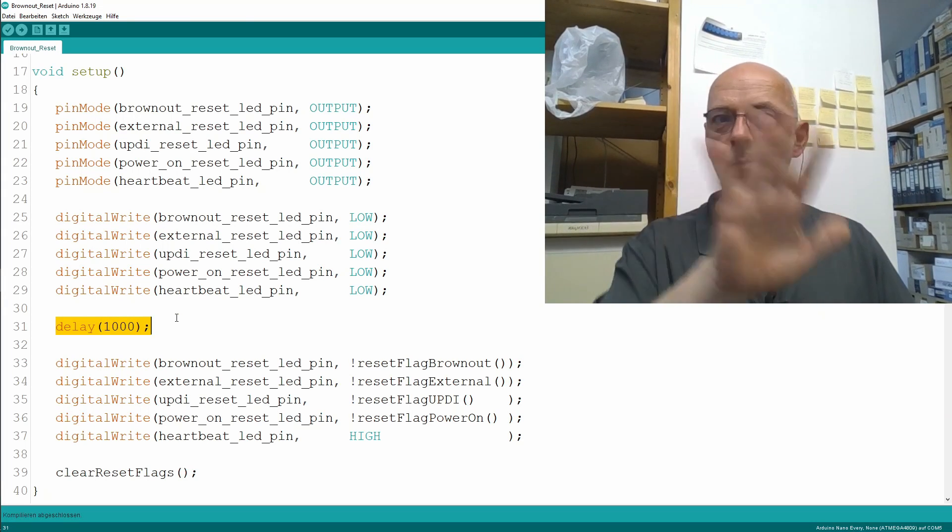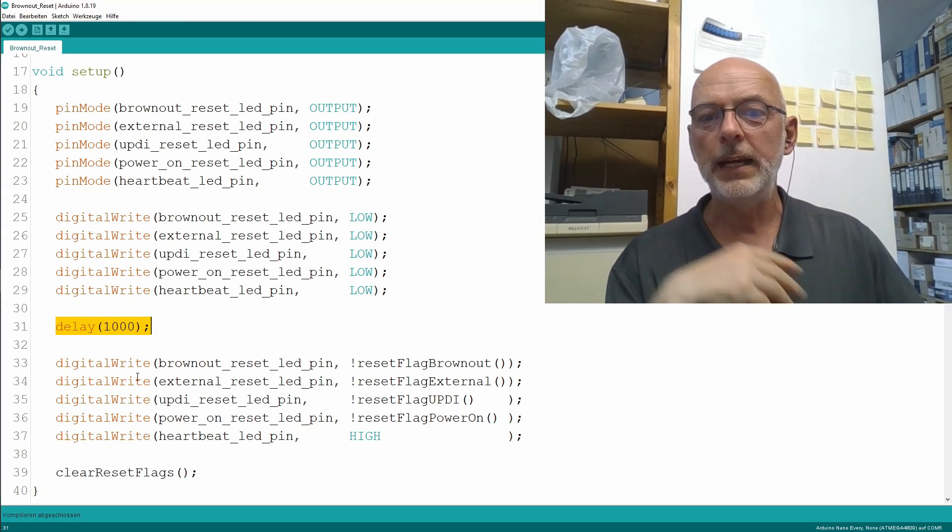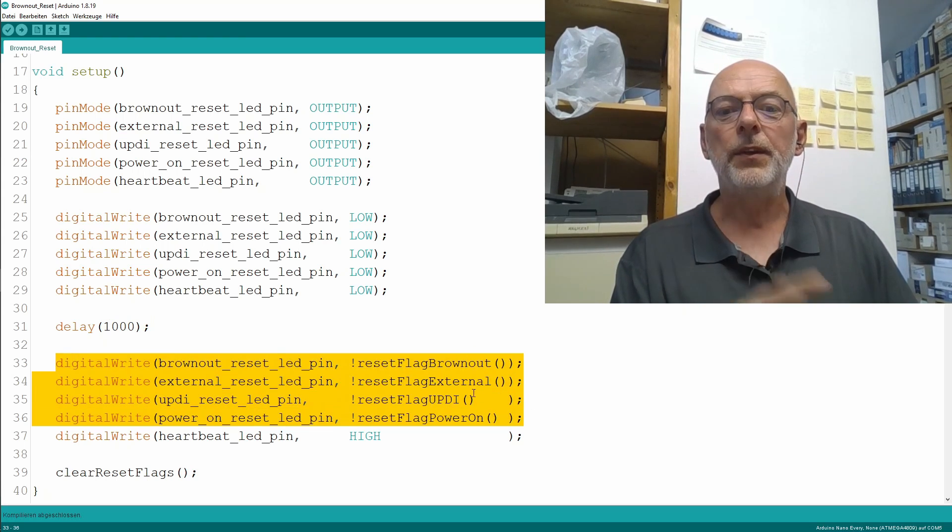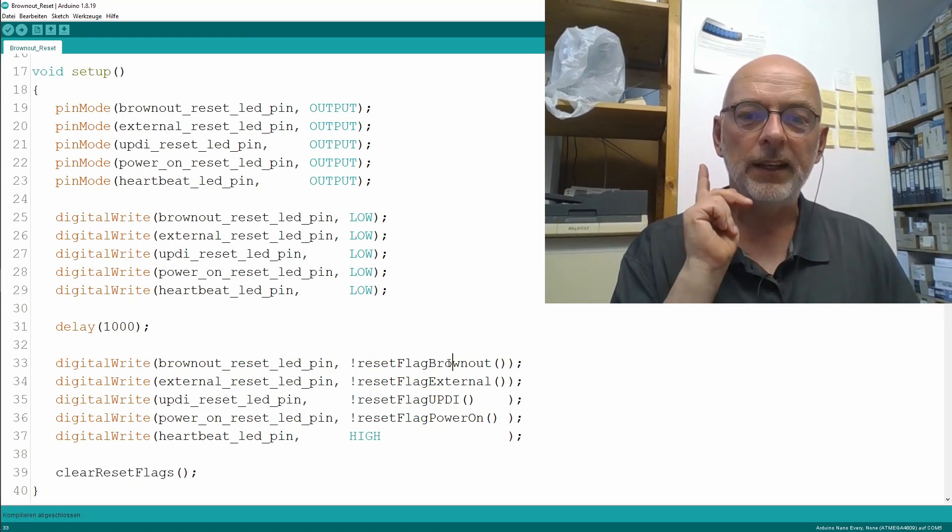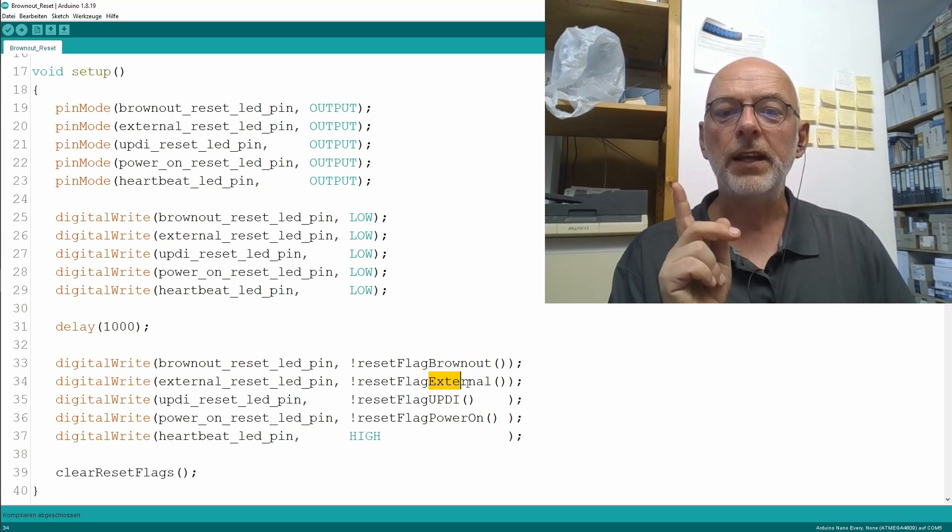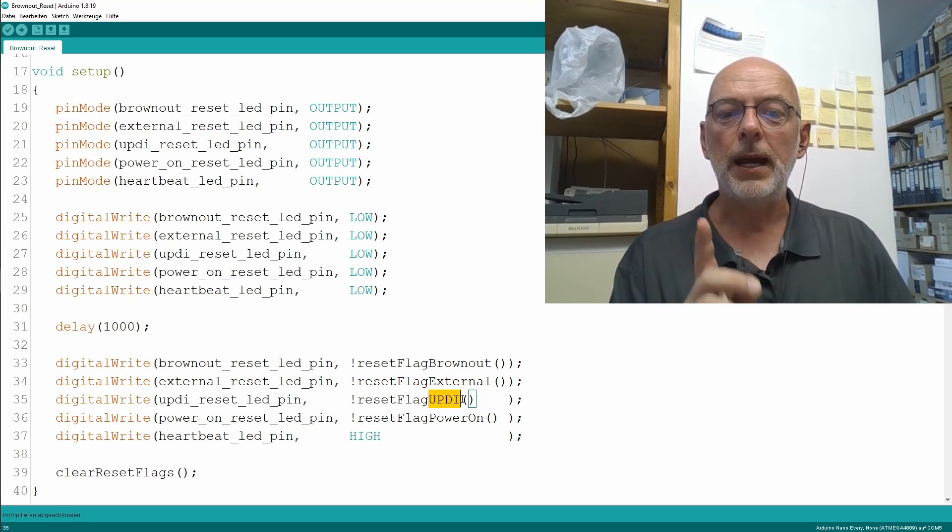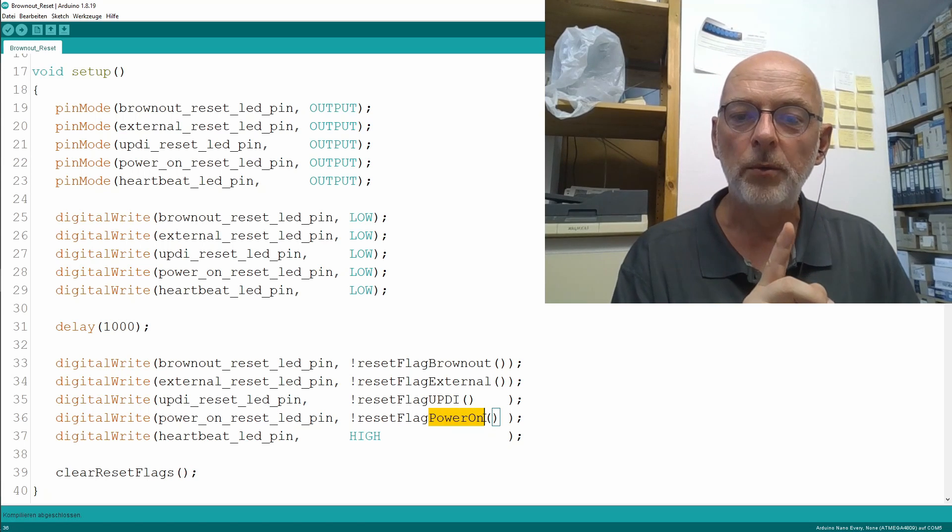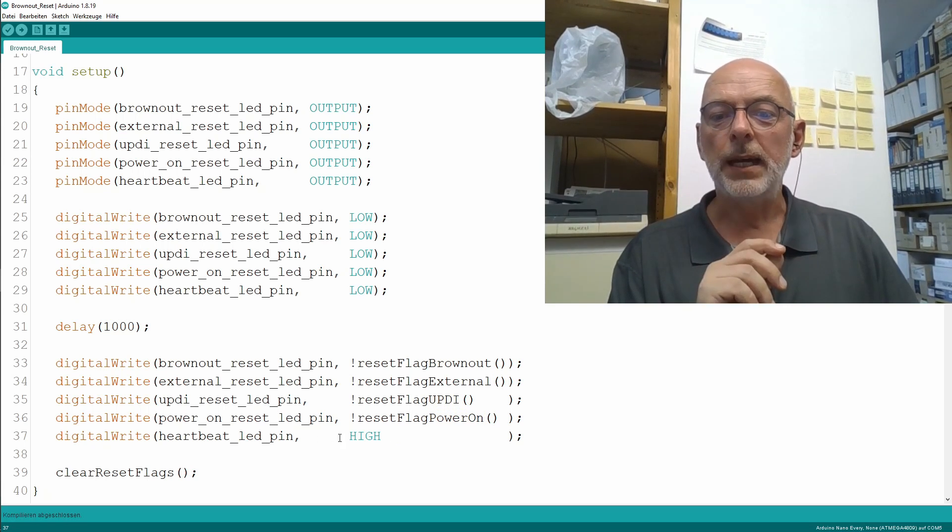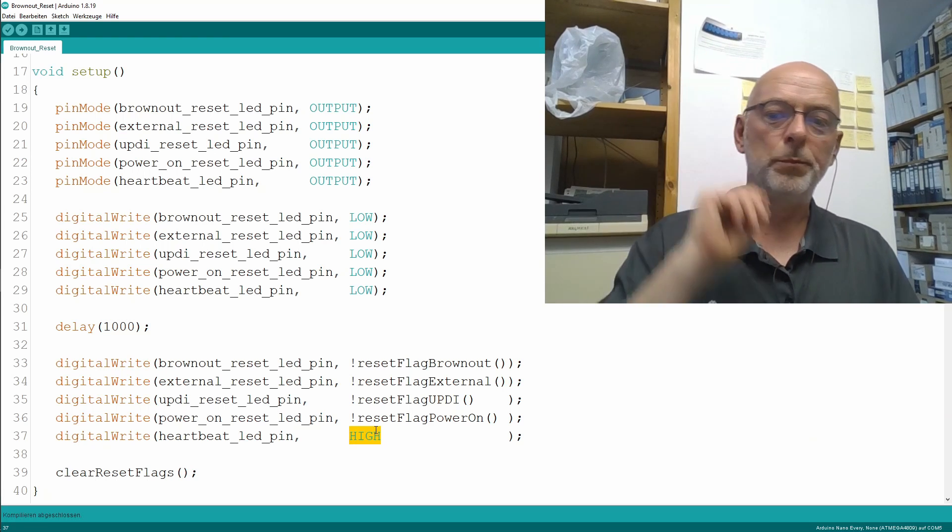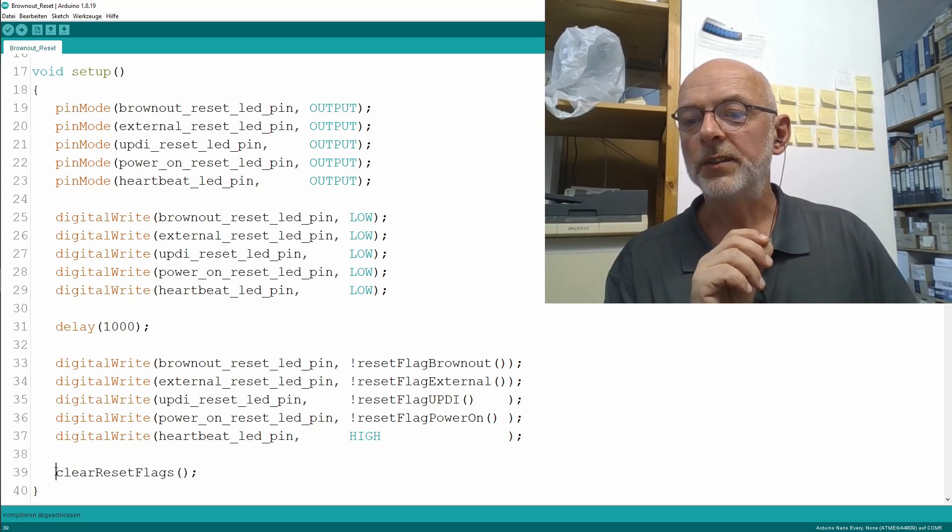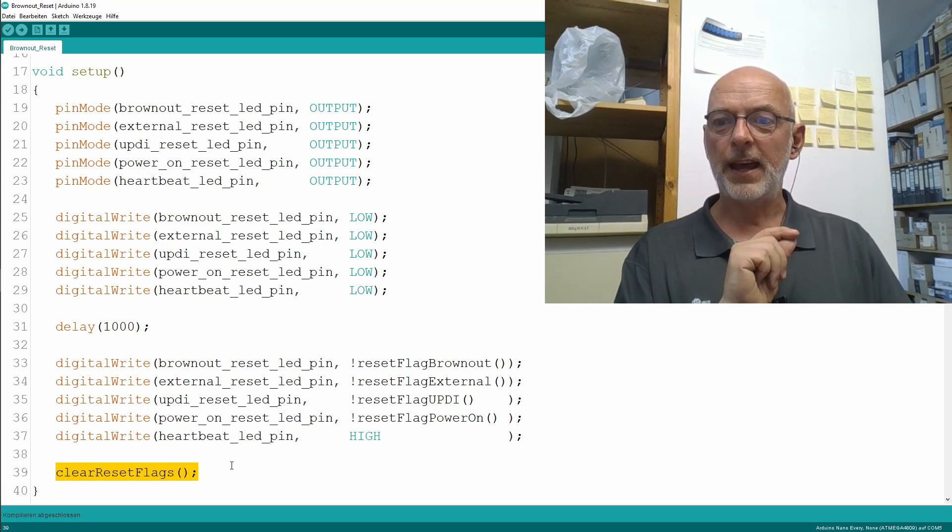Then I write to them either the state of a specific reset flag: either brownout reset, external reset, UPDI reset, or power-on reset. For the last pin, the heartbeat LED pin, I just set that to output high, meaning switching off the LED. Afterwards I clear all the reset flags.